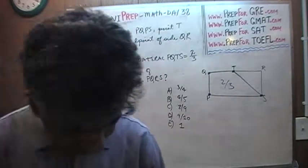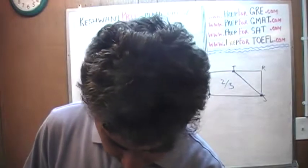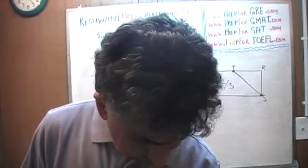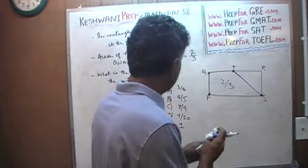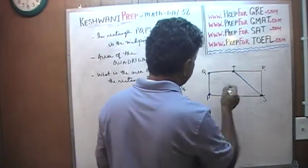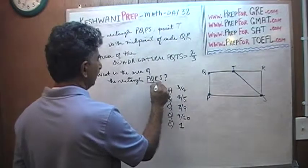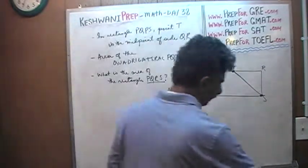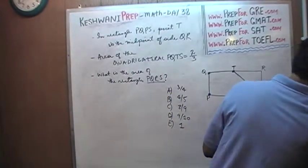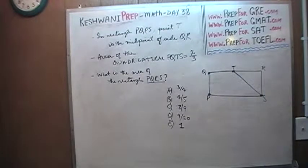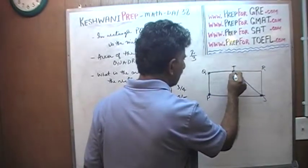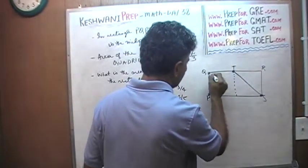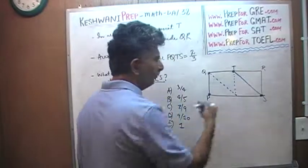Okay, here we go. The thing to do here is to realize that this rectangle PQRS can be broken into four equal parts as you can see.